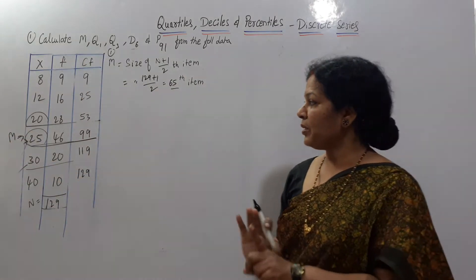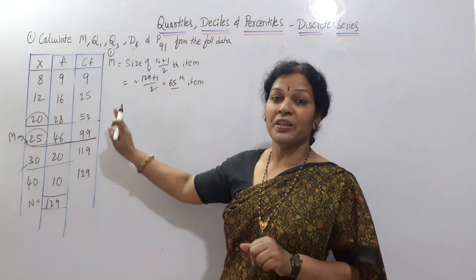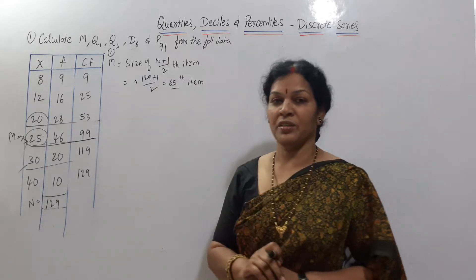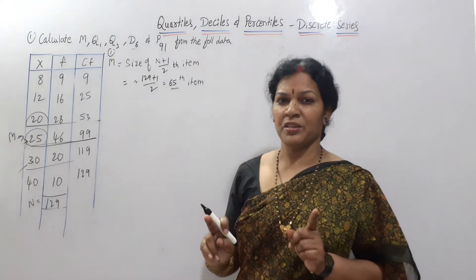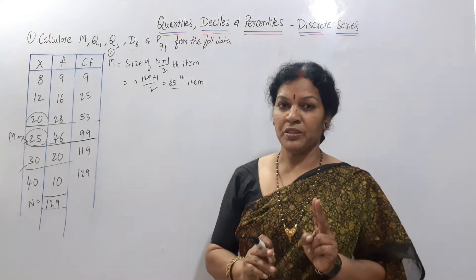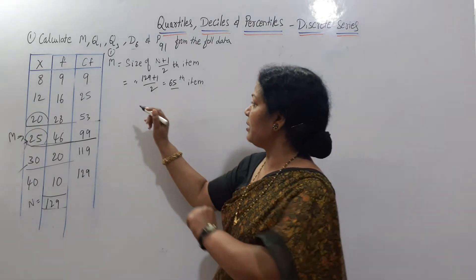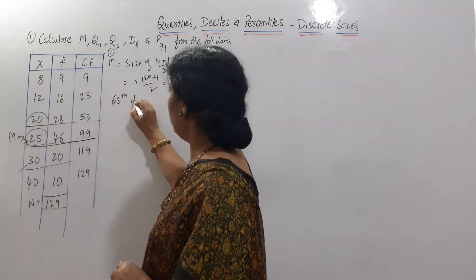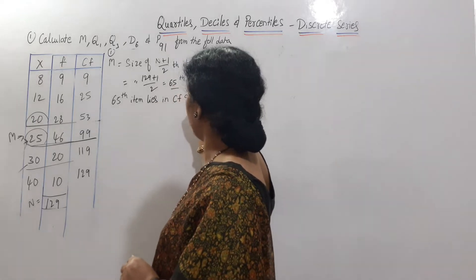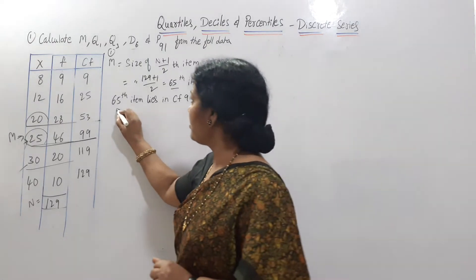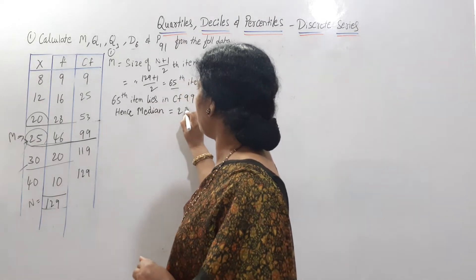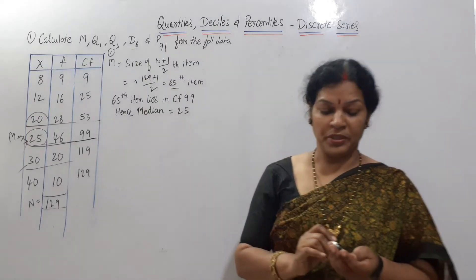So we look at where we are in the CF. The 65th item lies in CF 99. The corresponding X value is 25. Hence, median M is equal to 25.